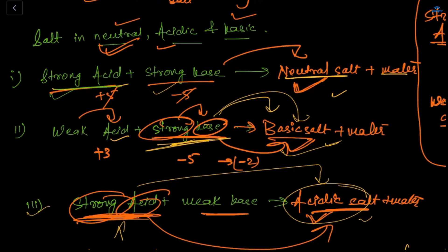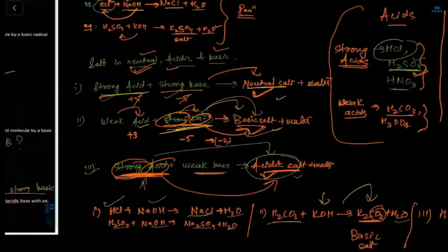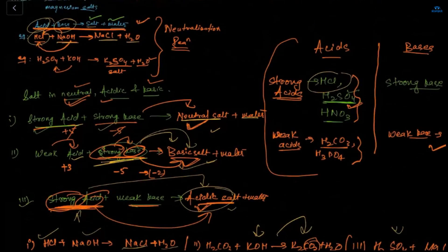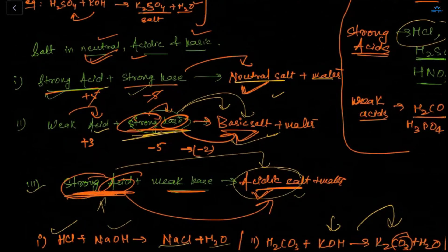If we add strong acid and strong base we get a neutral salt. If we add weak acid and strong base, because the base is stronger, we get a basic salt. Salt can be neutral, acidic, or basic — it depends on the relative strengths of the acid and base. The teacher returns to checking the CuO equation with students.